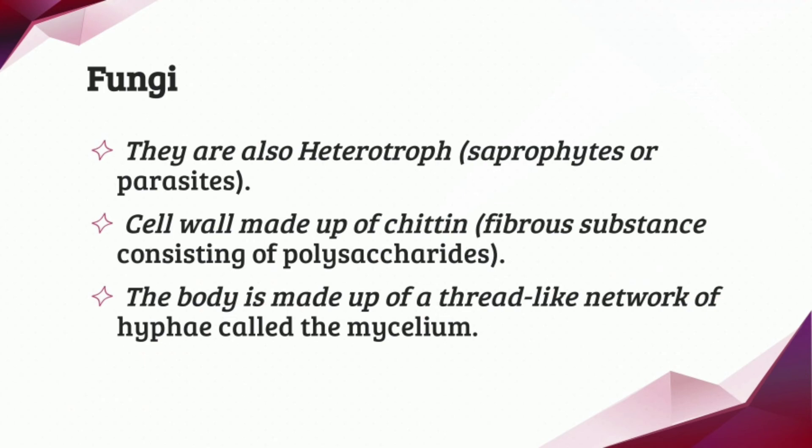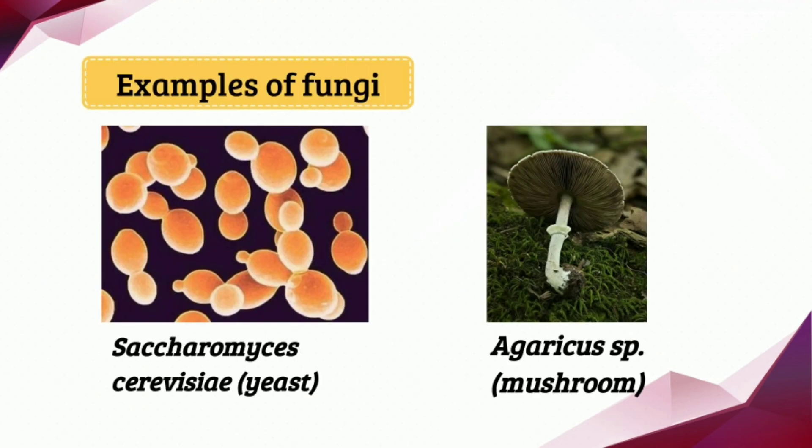Next, we have the Fungi kingdom. They are also heterotrophs, which are saprophytes or parasites. The cell wall is made up of chitin, which is a fibrous substance consisting of polysaccharides. The body of fungi is made up of a thread-like network of hyphae called mycelium. Examples of fungi are yeast and mushroom.